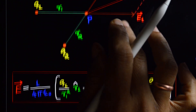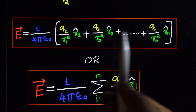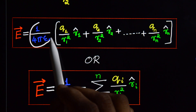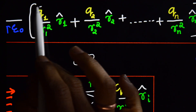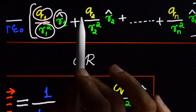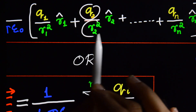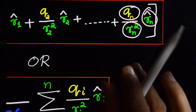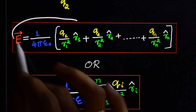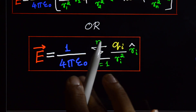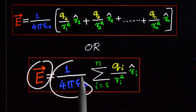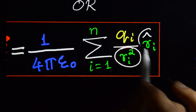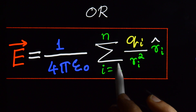If you know these two things, we can easily write the expression. The electric field E due to a system of n point charges is equal to (1/4πε₀) times [q1/r1² · r̂1 + q2/r2² · r̂2 + ...]. The same equation can be written as E = (1/4πε₀) Σ (qi/ri²) r̂i, where i runs from 1 to n.